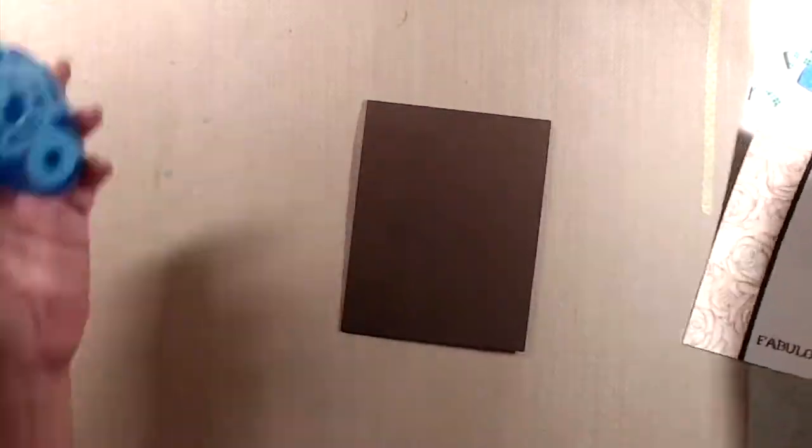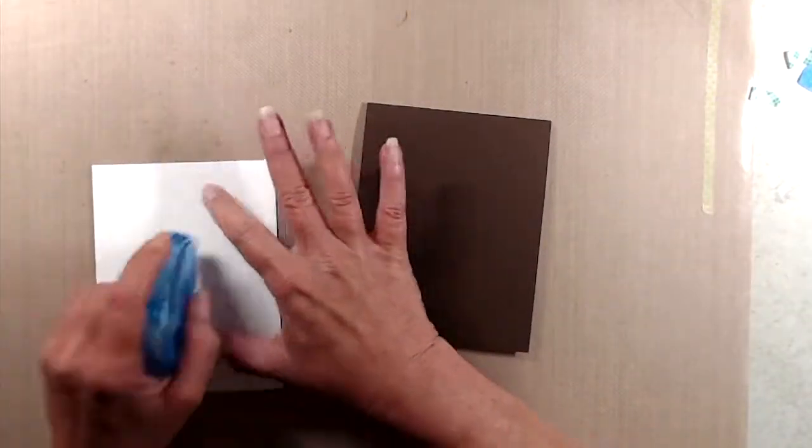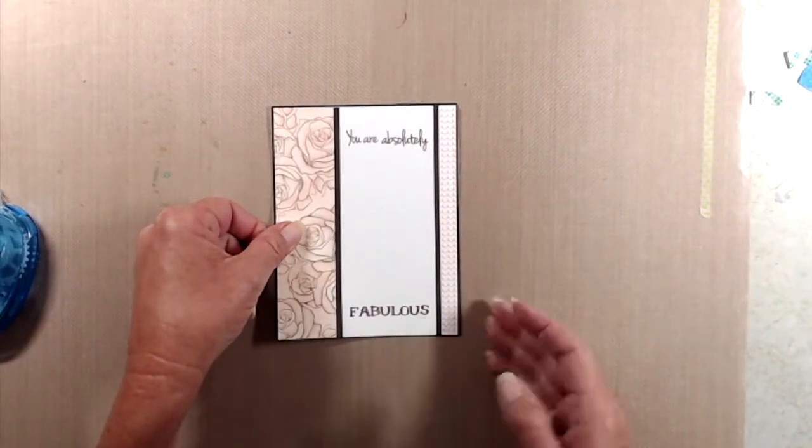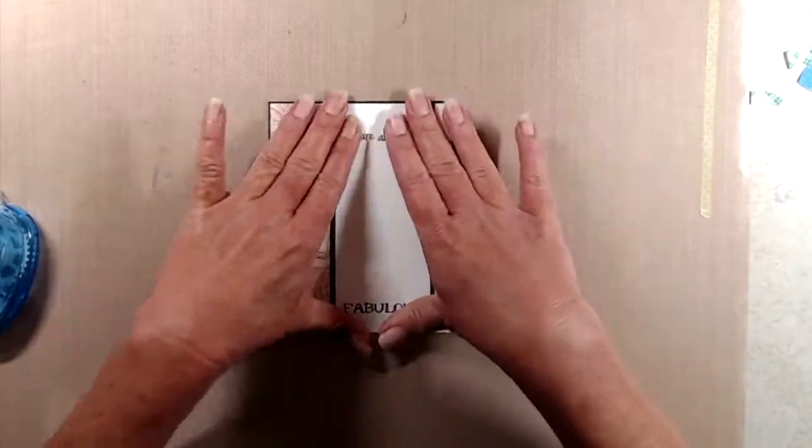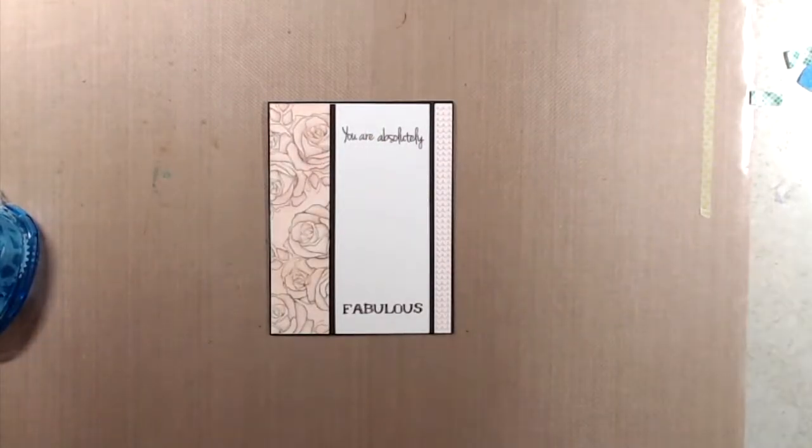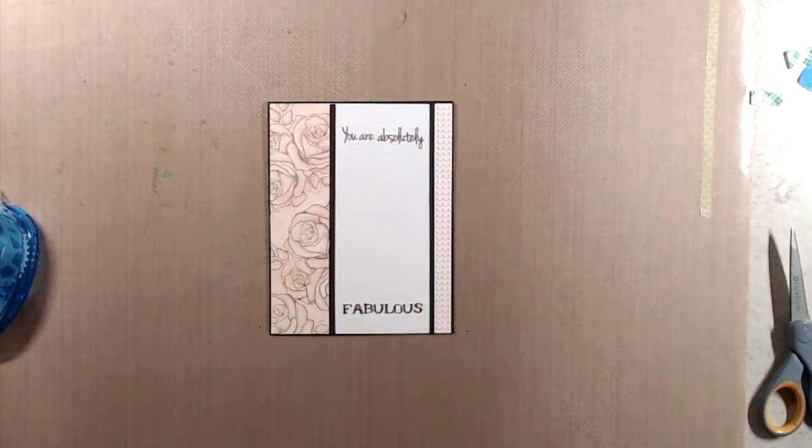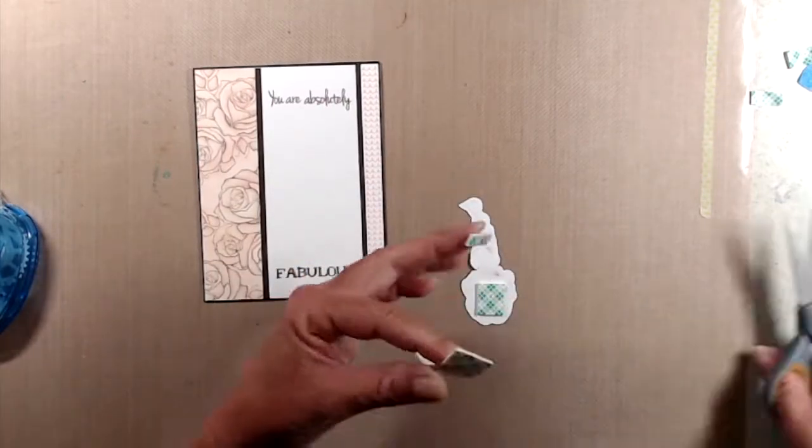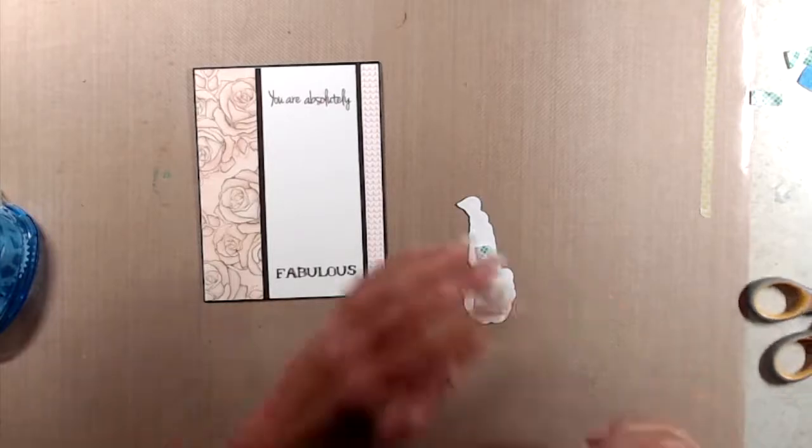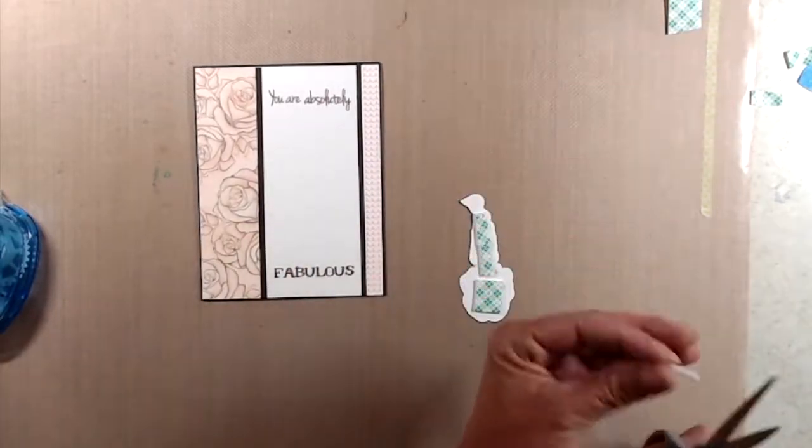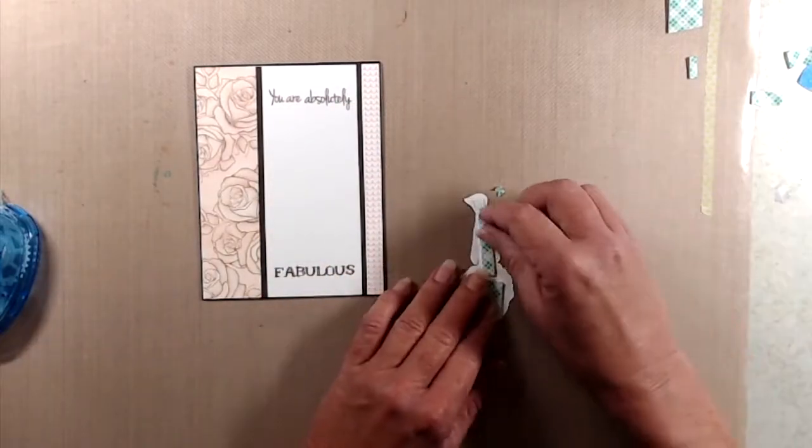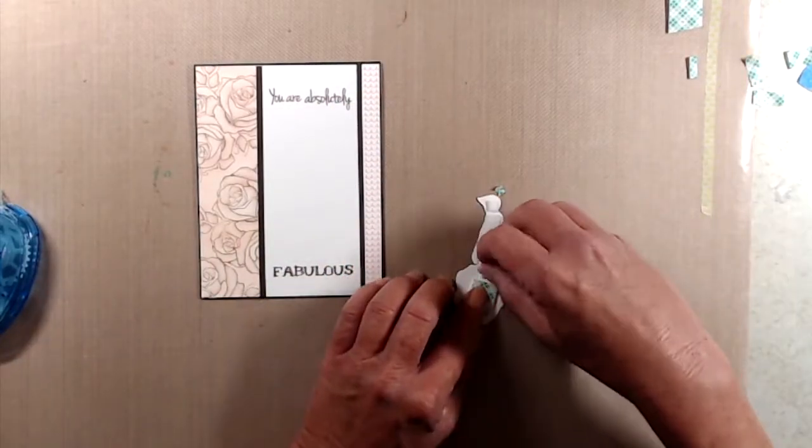Then I adhered that panel with my tape runner to the front of a top folding A2 size note card, again made from brown cardstock. Then I added some foam tape onto the braided image and dropped that right down into the center. That finishes up my cards for today. Thank you so much for joining me. If you like this video, please give it a thumbs up. If you've not yet subscribed, I'd love it if you would. And don't forget to ring the bell so you're notified every time a new video is posted. Thanks again, and we'll see you next time.